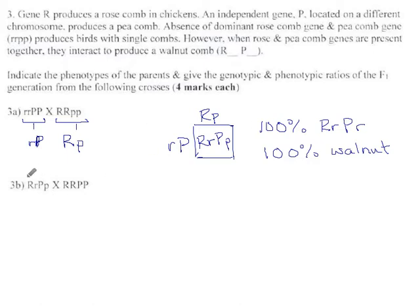Now we have, this parent is heterozygous for both traits, which means we have to do a foil to figure out how many gametes it can make. It can produce first, big R, big P, outside, big R, little p, inside, little r, big P, and last, little r, little p.